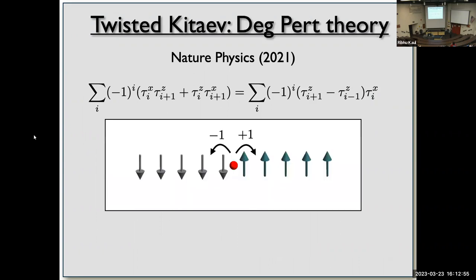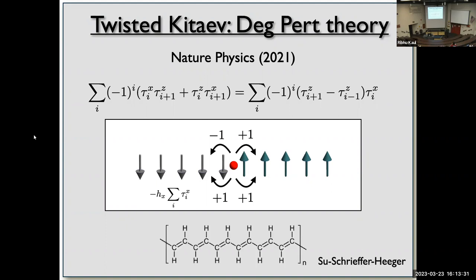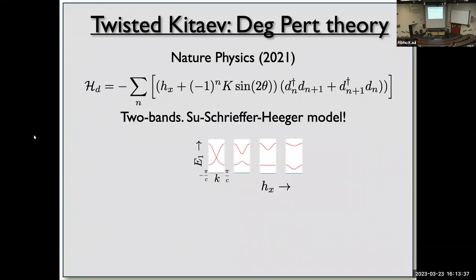This alternating (−1)^i term means that when a domain wall hops from site to site, it picks up a +1 phase on even bonds and a −1 phase on odd bonds. This is very reminiscent of the Su-Schrieffer-Heeger (SSH) model of polyacetylene — the progenitor of topological insulators. The uniform transverse field corresponds to uniform hopping of domain walls, and the alternating sign corresponds to the staggered hopping of the SSH model.